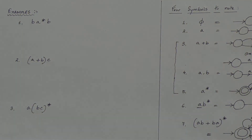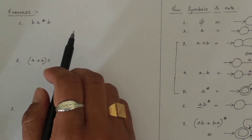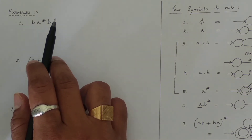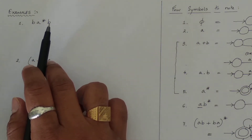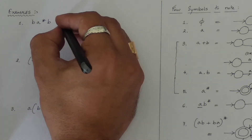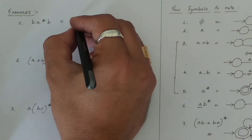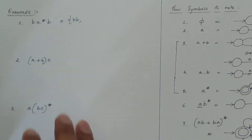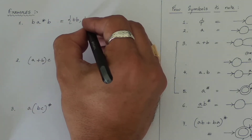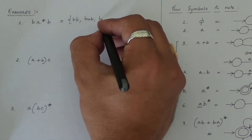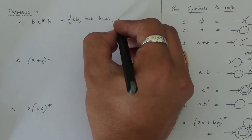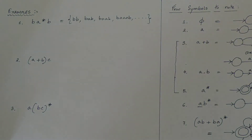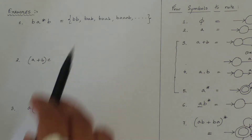Let us start with the first example: b·a* (to the power star)·b. Initially we need to find the possible strings in this expression. If the star equals zero, the initial string will be 'bb'. If star equals one, it will be 'bab'. If star equals two, it will be 'baab', then 'baaab', and so on. So we understand that strings start with b and end with b.